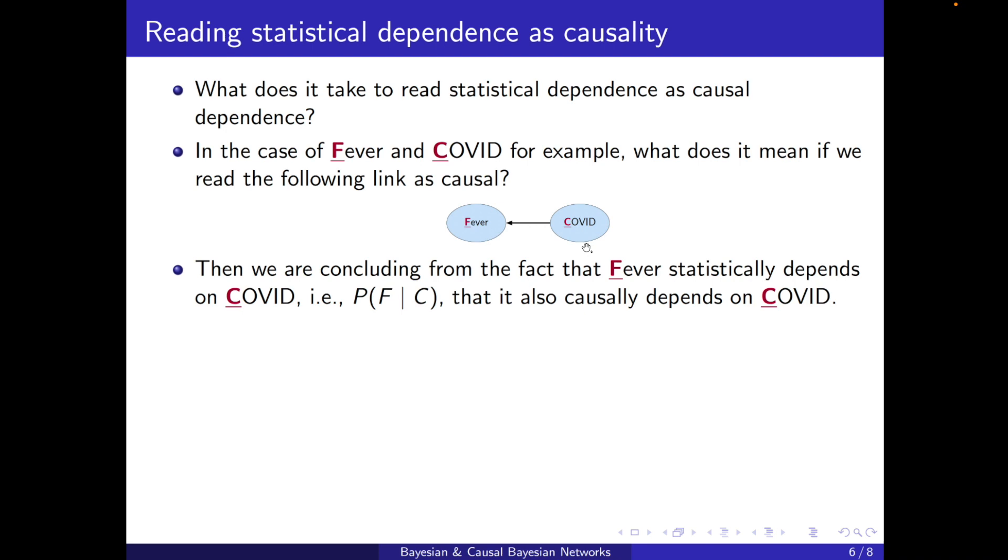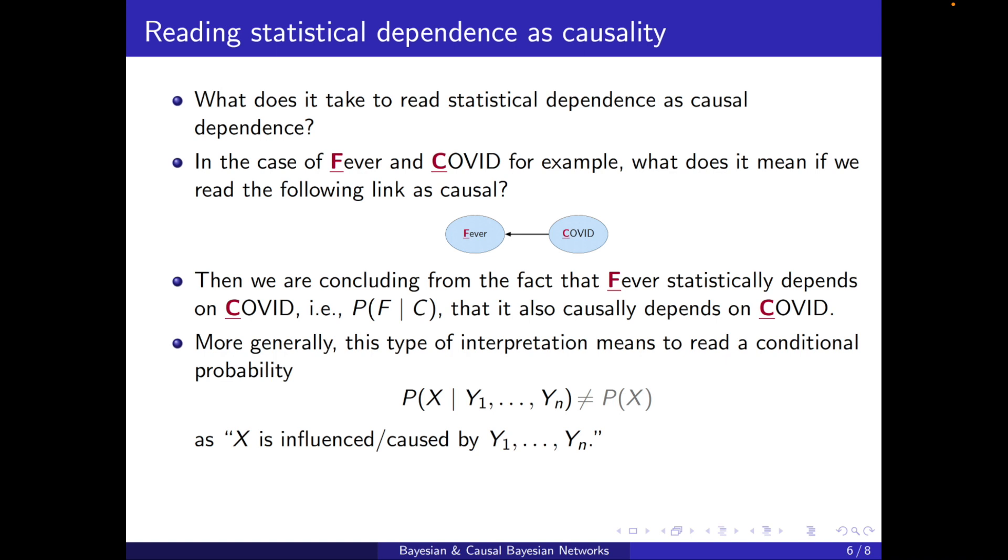More generally, this type of interpretation means to read a conditional probability P(X|Y1,...,Yn), and I'm assuming that it's not equal to P(X), meaning that the two are not independent, they are dependent, to read this or to interpret this as X is also caused by Y1 to Yn.